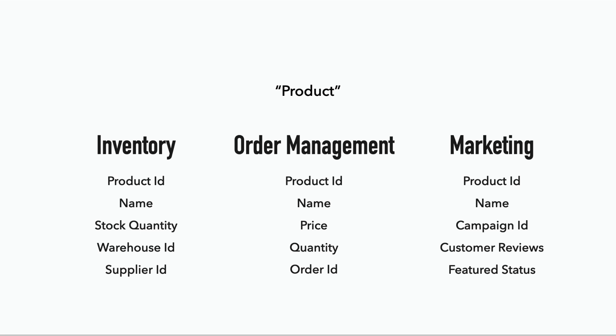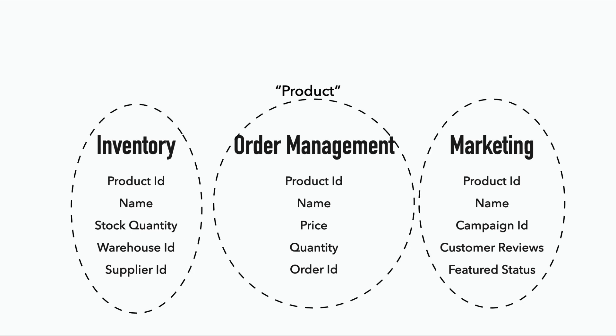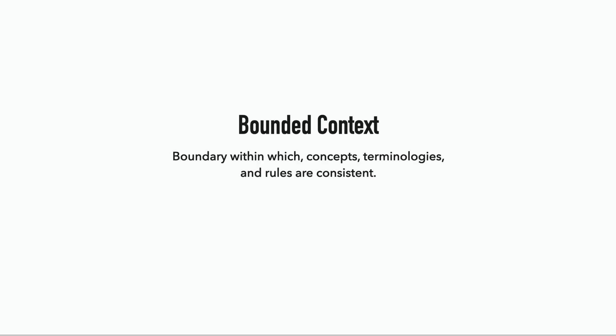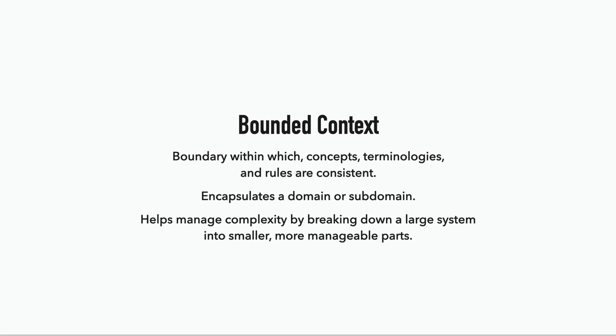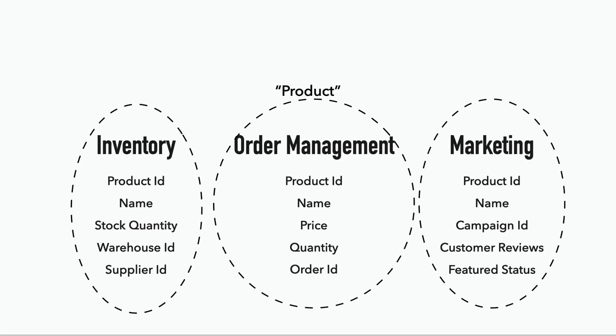So depending on the domain, the product entity can have a very different meaning. And to make sure that something like a product has a consistent meaning within a particular context, we literally put a boundary around each of these domains, and we call this a bounded context — which is a boundary within which the concepts, terminologies, and rules are consistent, and they are isolated from other bounded contexts. A bounded context would encapsulate a particular domain or subdomain, and it helps us manage complexity by breaking down a large system into smaller and more manageable parts, allowing different models of looking at the world from interfering with each other.